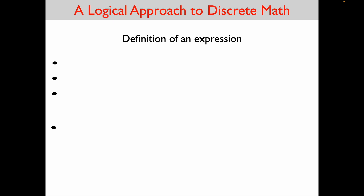The definition of an expression has four parts. First, a constant or a variable is an expression. A constant is a number like 231. A variable is represented by a lowercase letter, for example the lowercase letter x. So in algebra you might have 231 times x, where 231 would be a constant and x would be the variable.